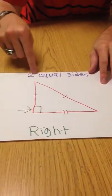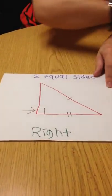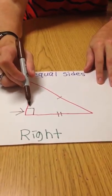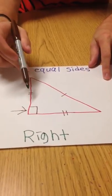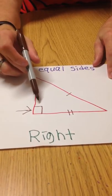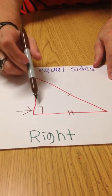The nice thing about right triangles is they have this mark right here, this half box, that designates that that is a 90 degree angle.